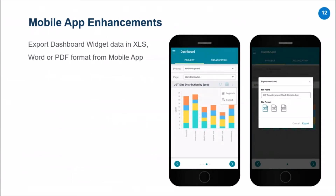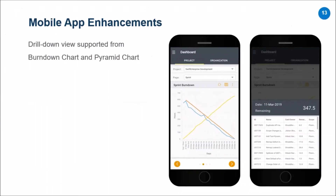On the mobile app front, as part of this release, you will now be able to export the dashboard widget data in XLS, Word, and PDF format — just like you were able to export dashboard widget data on the web application, you can now download it onto your mobile from the export option available on the dashboard widget. For your burndown chart and pyramid chart, you will now be able to drill down by double tapping on the chart to see the drill down of all the work items contributing to the overall remaining effort and actual effort — all that information will be available on the mobile app dashboard as well.